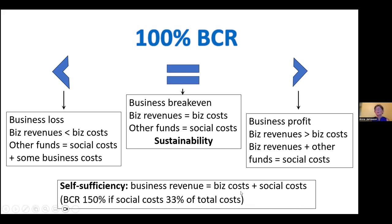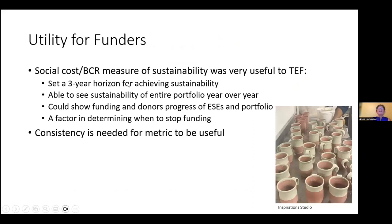You might be interested to know when you reach self-sufficiency. Business cost recovery doesn't directly show self-sufficiency — it really depends on what proportion of your total costs are social costs. Self-sufficiency is when your business revenue covers all of your costs, both business and social. In the case where social costs average 33% of total costs, a business cost recovery of 150% would indicate self-sufficiency. We did have a number of businesses that became self-sufficient and no longer needed Toronto Enterprise Fund funding, so we arranged to transition them.